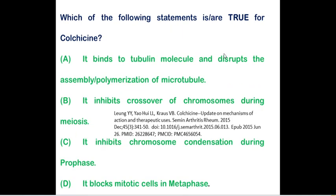Which of the following statement is true for colchicine? First thing, this particular drug will bind to a tubulin molecule and disrupt the assembly as well as polymerization of microtubules. Option A is correct. Next question is that it inhibit the crossover of chromosome during meiosis. Are you going to be able to find any research article saying this particular drug inhibiting the crossing over of chromosome during meiosis? Option B is wrong.